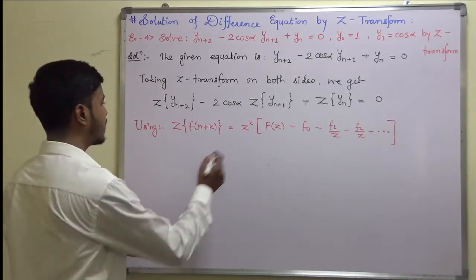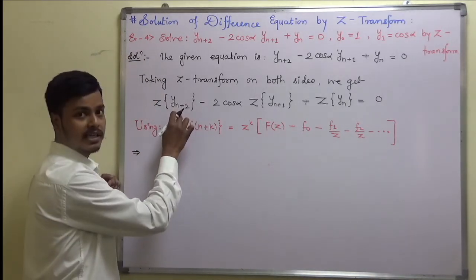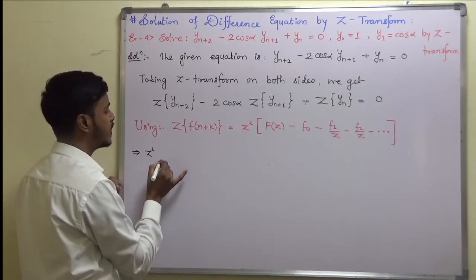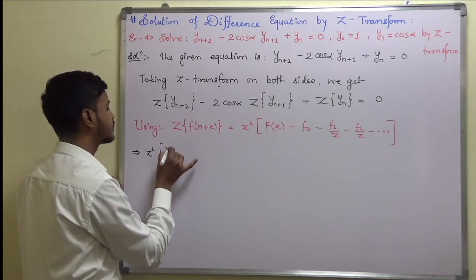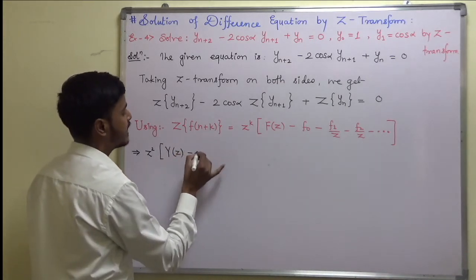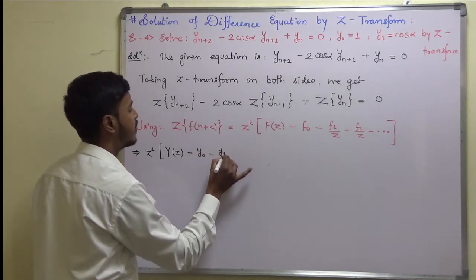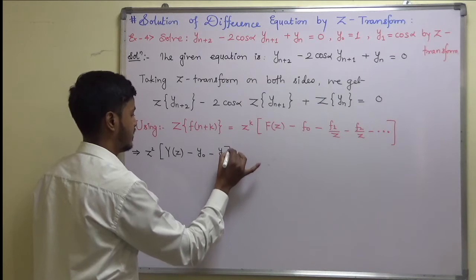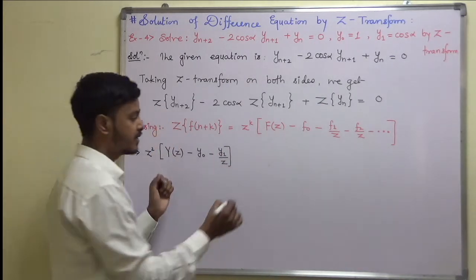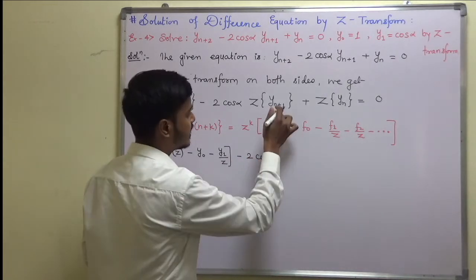Now apply this to the last equation. With k equal to 2, I will write the first term as z^2 times [y(z) - y(0) - y(1)/z]. This completes the Z-transform of the first term minus 2cos(alpha) Z-transform of this.